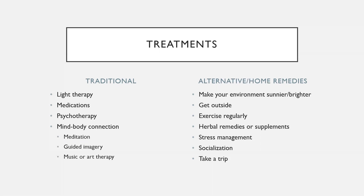Once they have determined whether or not your symptoms are being brought on solely by seasonal affective disorder, they can look at some possible treatments. Some of these treatments may include light therapy, also called phototherapy. You sit a few feet from a special light box so that you're exposed to bright light within the first hour of waking up each day. Light therapy is meant to mimic natural outdoor light and appears to cause a change in brain chemicals linked to mood. It's one of the first treatments for fall onset SAD and generally starts working in a few days to a few weeks with very few side effects. However, research on light therapy is limited, so before you purchase any light box, you should talk with your doctor about what one would be best for you.